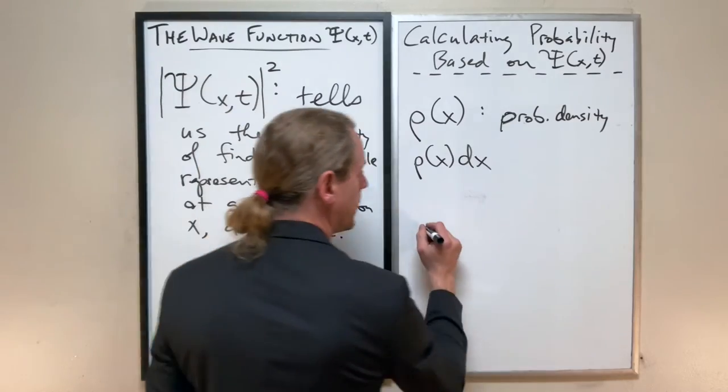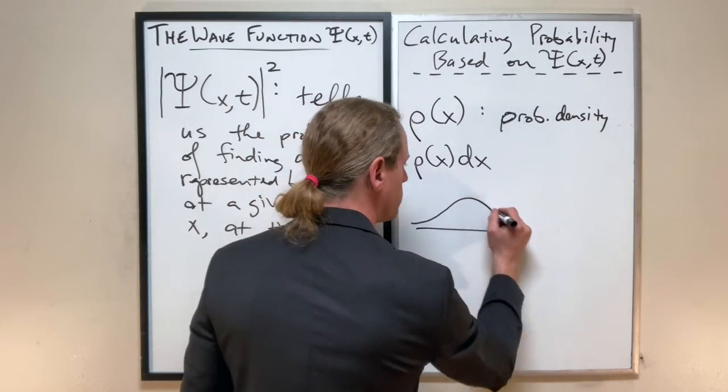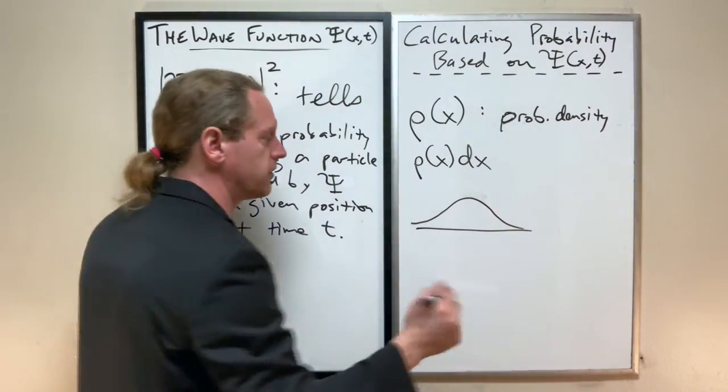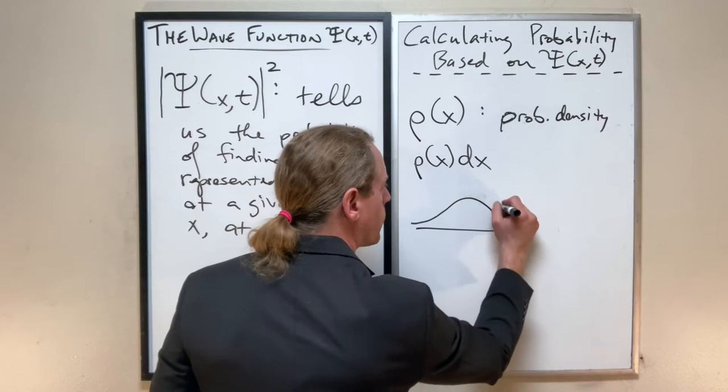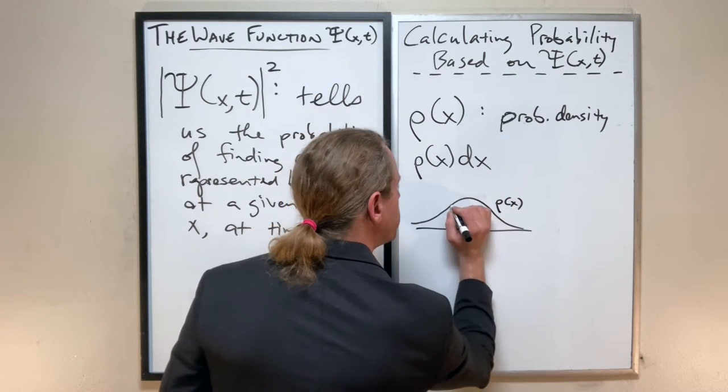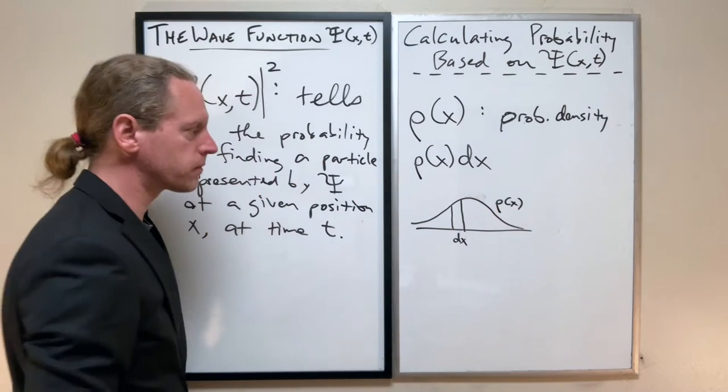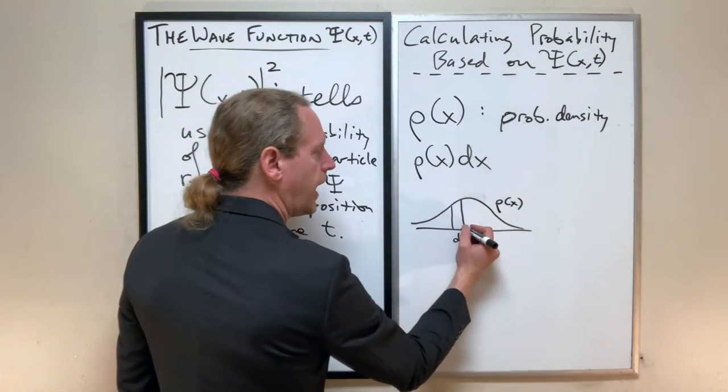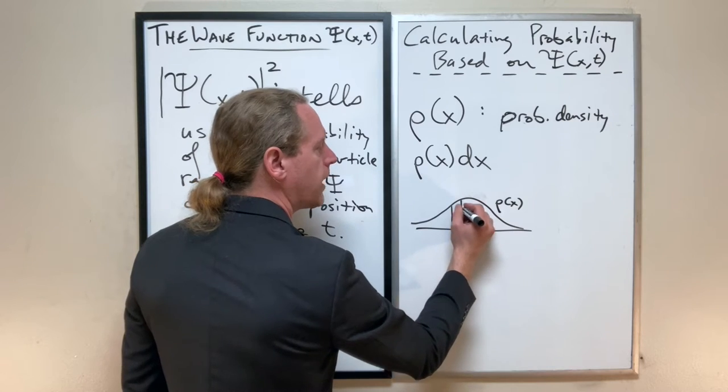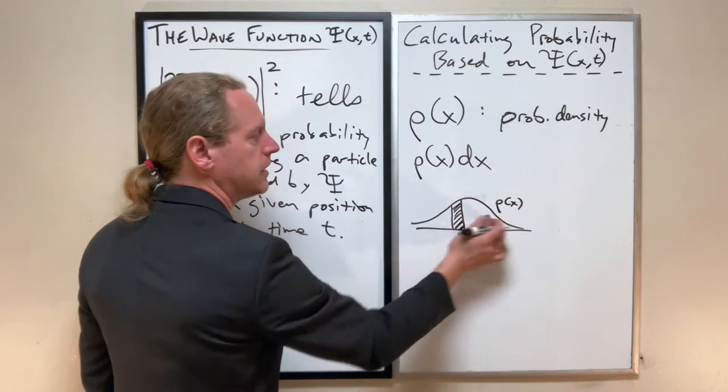and you can think of that if you just have a normal, well normal in a typical sense, a distribution where this is what our rho of x is, and if you have some small width dx there, that if you take the area of that little slice compared with the entire area,